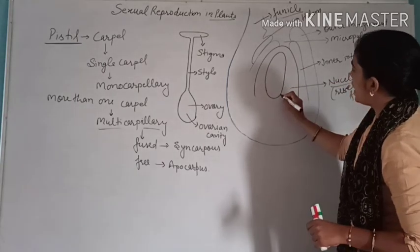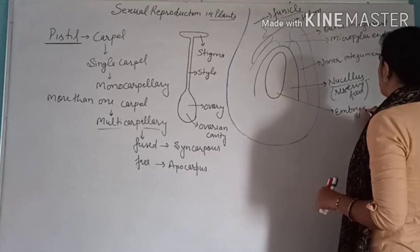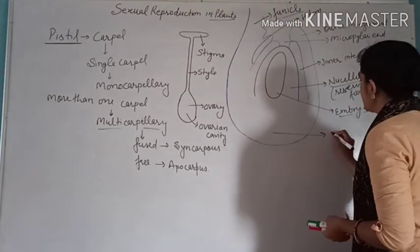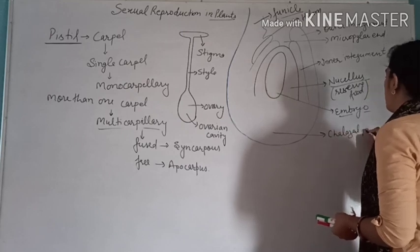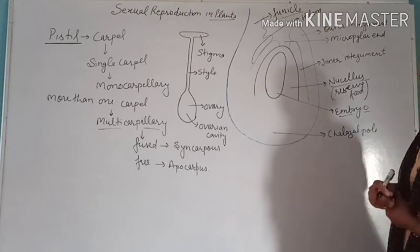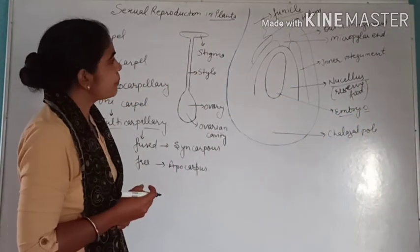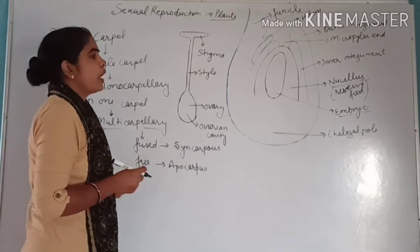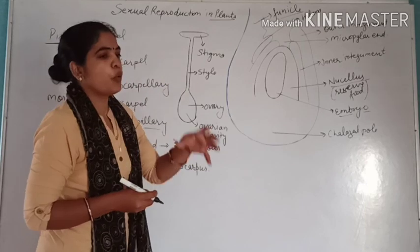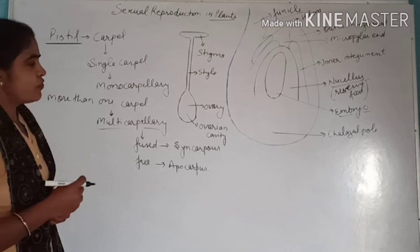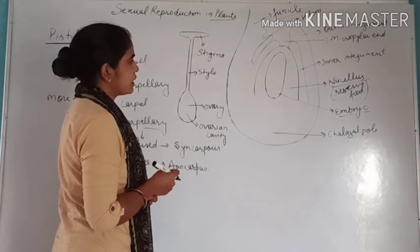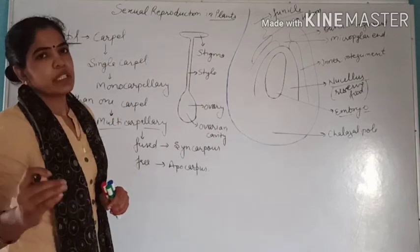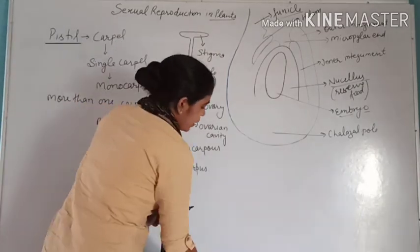The nucellus-enclosed cavity is called the embryo sac. The region at the opening is called the micropylar end, and opposite to this is called the chalazal end. Now how is this embryo sac developed? We have the megaspore, and the process of formation of megaspore is called megasporogenesis. At the micropylar end, the MMC — megaspore mother cell — is located, which divides by meiosis.